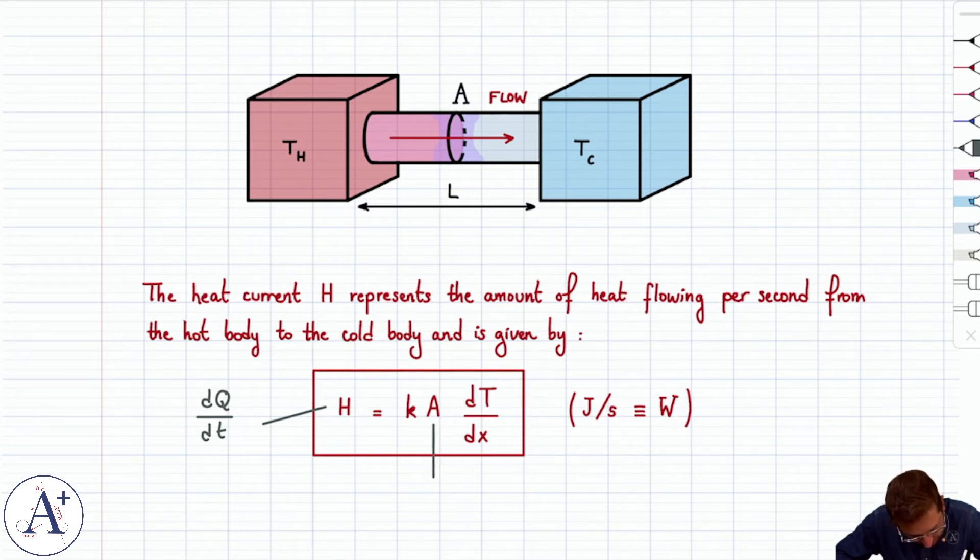A is the cross-sectional area, which we'll typically see as constant in the problems that we do. You could deal with a non-constant cross-sectional area, but it does make things a little harder.